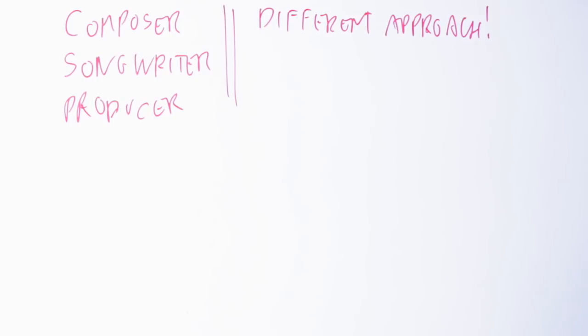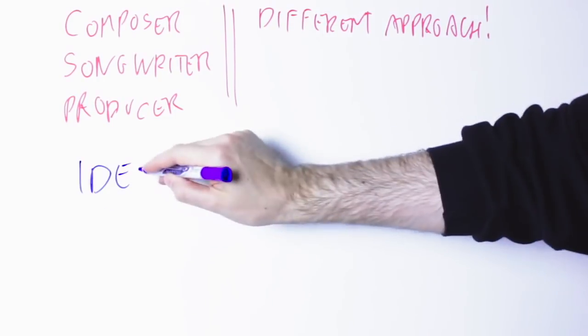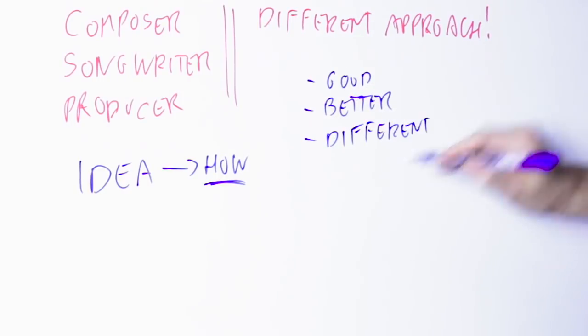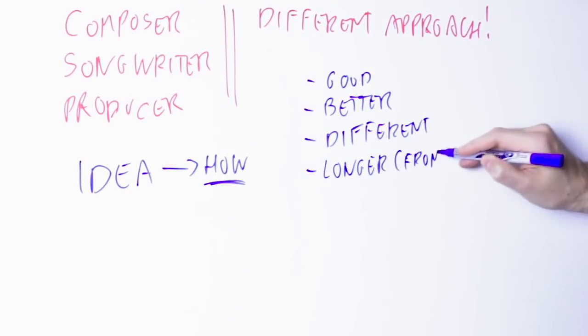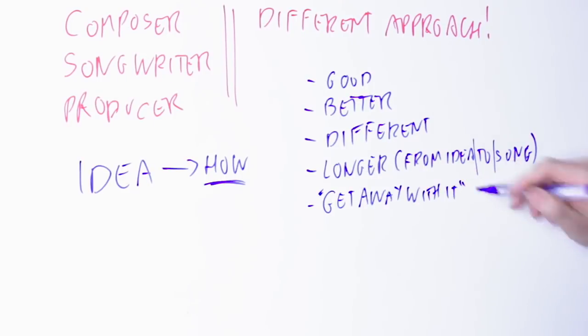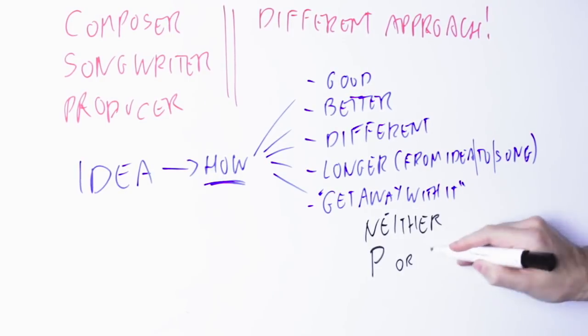They think, I have an idea. Now how can I make this idea sound good or sound better or sound different? How can I make this idea longer? I mean, how many times it happens that you write eight bars of music and you want to know how to go from there to a full song? How can I do what I want musically and get away with it? That's how a composer or a songwriter or a producer think. It's a completely different set of problems and it calls for a completely different set of solutions.